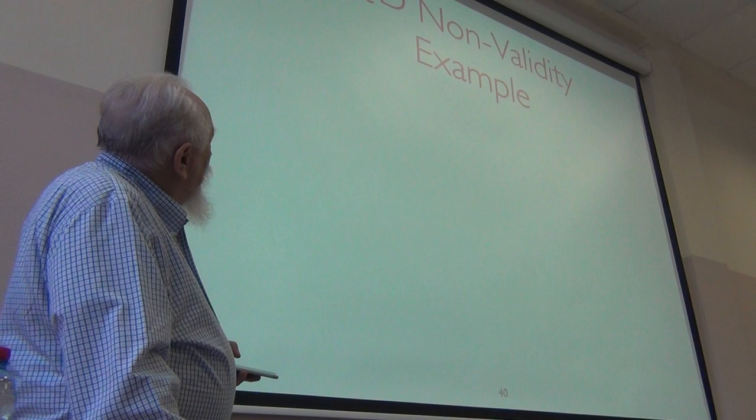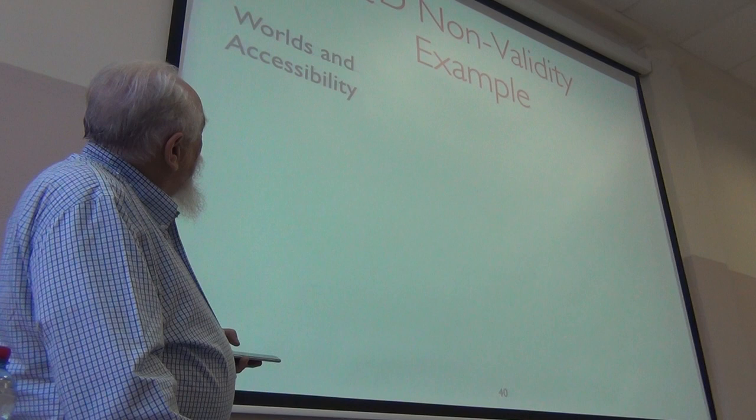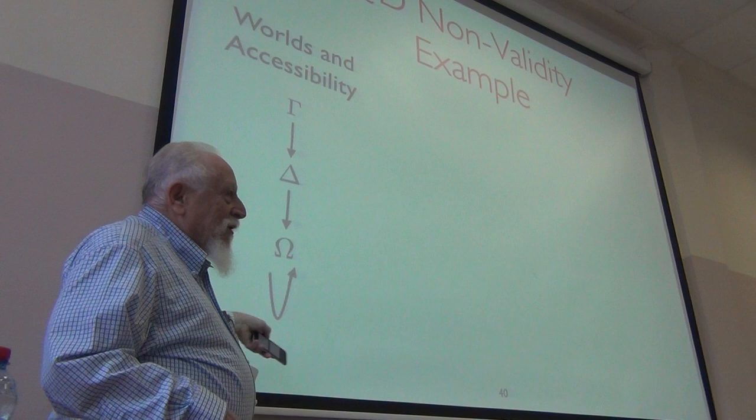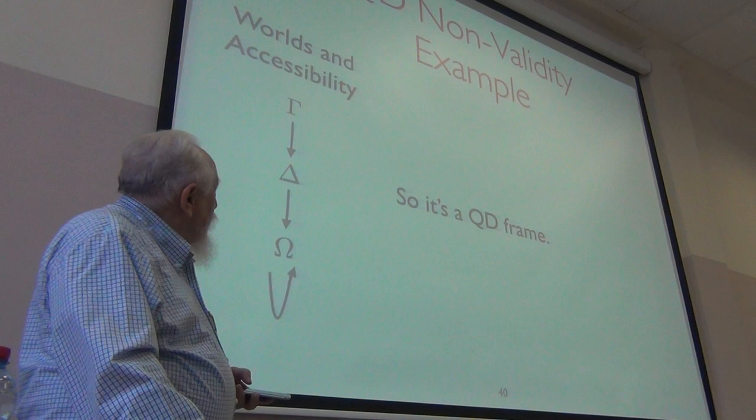Here's a QD example. This is a little more complicated. So remember in QD, every world has to have some world accessible from it. So gamma has delta, delta has omega, omega has itself. I'm not assuming transitivity here. But this makes it a QD frame.